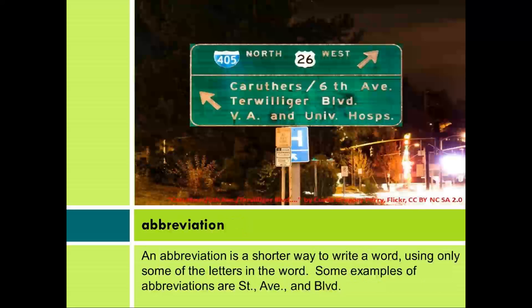Abbreviation. An abbreviation is a shorter way to write a word, using only some of the letters in the word. Some examples of abbreviations are ST, AV, and BLVD.